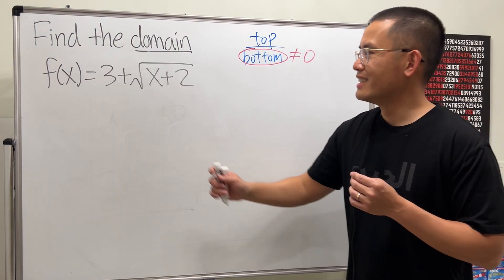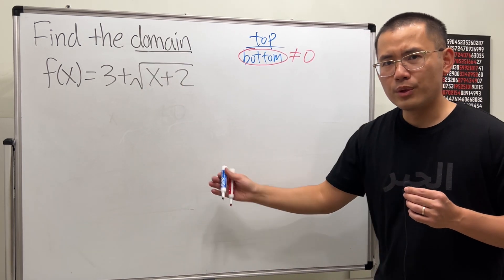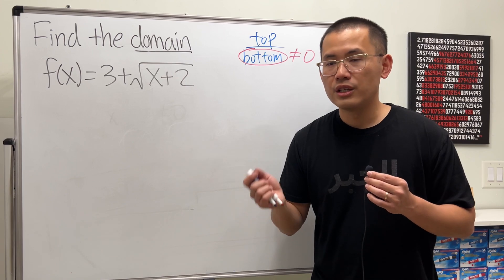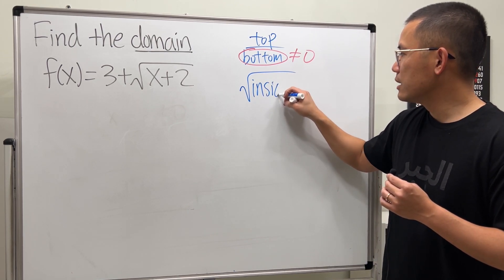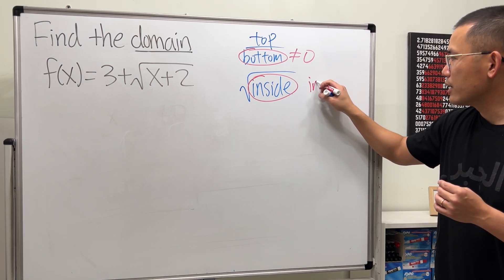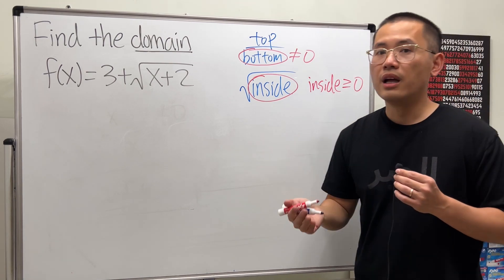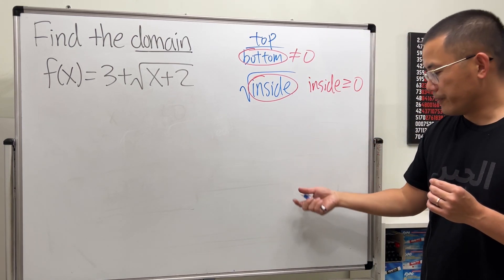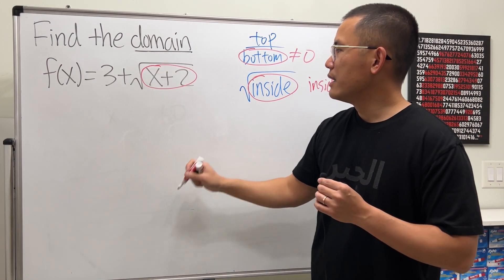Now the next case: we have a square root — 3 plus square root of x plus 2. The square root of a negative number gives a non-real result. So when we have a square root in a function, we focus on just the inside and make sure the inside is greater than or equal to 0. Otherwise we get a non-real result. The square root of 0 is fine, which is why we include 0.